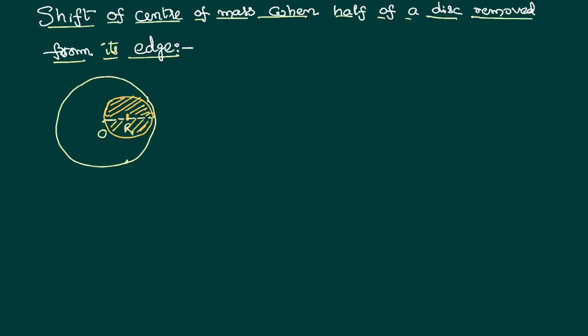It is obvious that now the center of mass is no more at the point O, because the right side of the disc becomes light and the left side becomes heavy. Therefore, the center of mass shifts from O to a new position O'. We would like to know how much it shifts — what is the value of OO'?